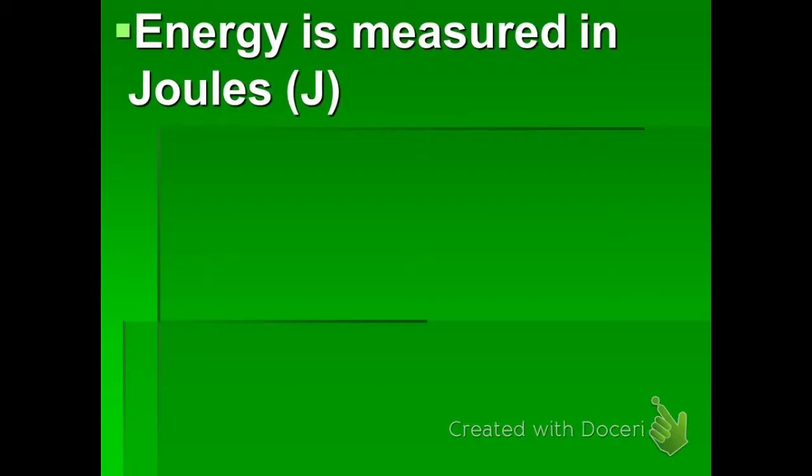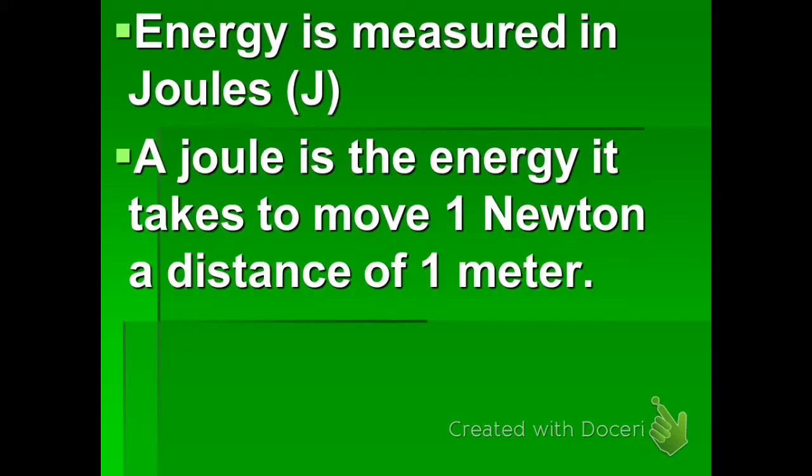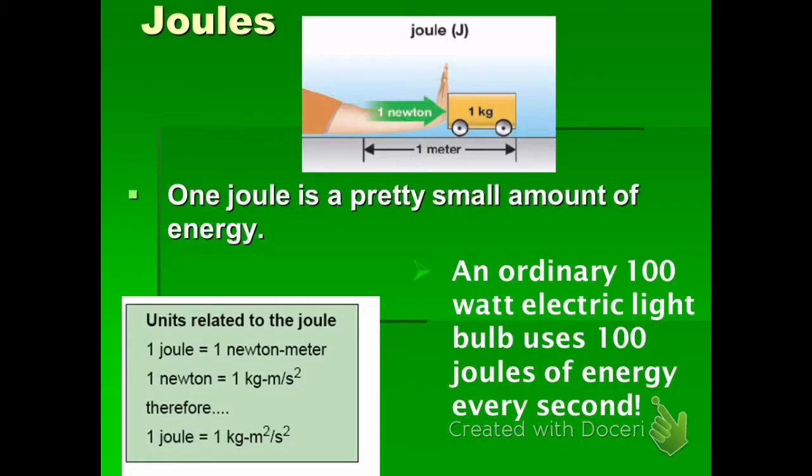Energy is measured in joules. These are the units that we're going to be using in this chapter, and a joule is the amount of energy it takes to move with a 1 newton force a distance of 1 meter. So we often say that a joule is equal to a newton meter. Now, a joule is not very much energy. It's a fairly small amount. For example, a 100-watt light bulb uses 100 joules of energy each and every second that it's running.